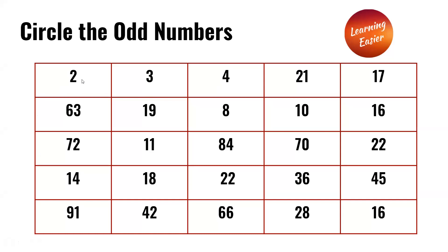In the first row we have 2, 3, 4, 21, and 17. The odd numbers in this row are 3, 21, and 17.